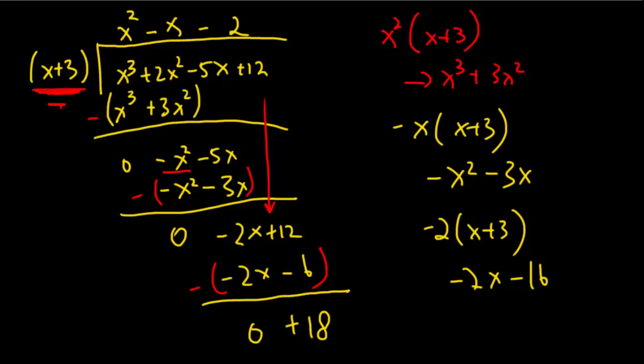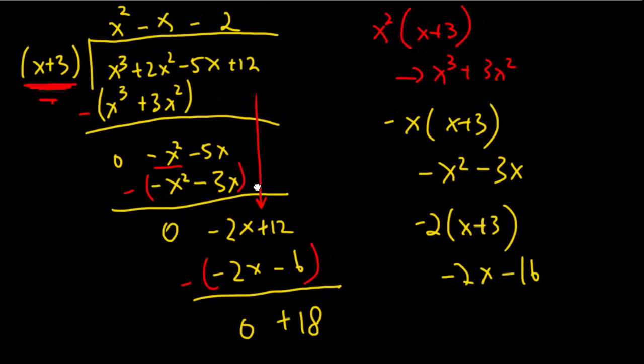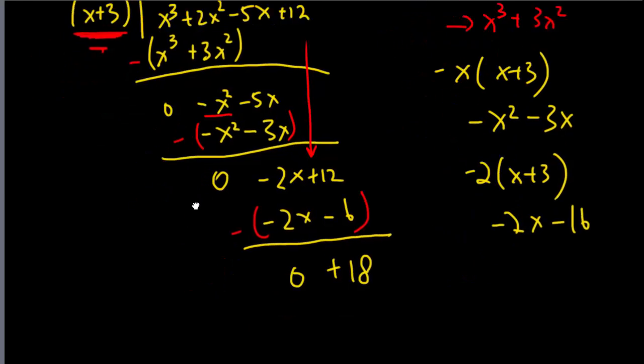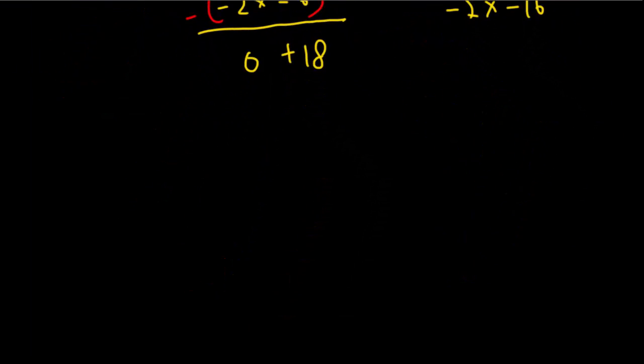So we've done. We've finished dividing. So what does this all mean? How do I put this back into the Factor Remainder Theorem? So what was the Factor Remainder Theorem again? It is p(x) equals a factor or a function times your quotient plus your r.